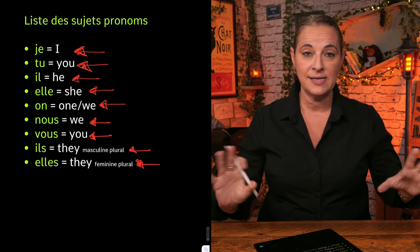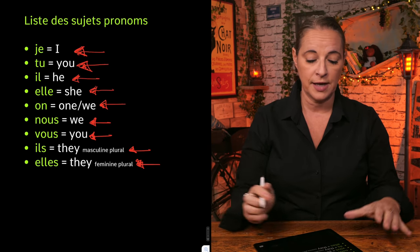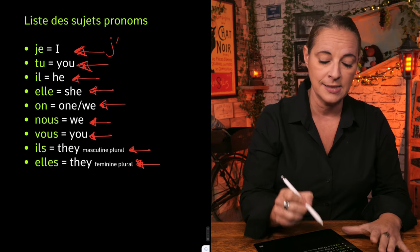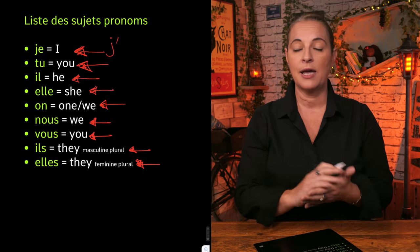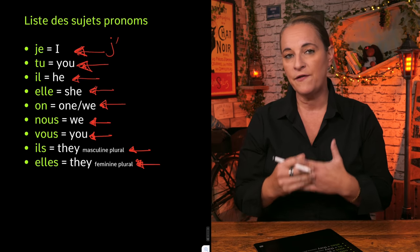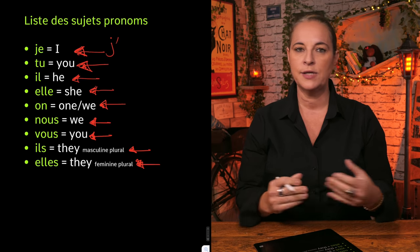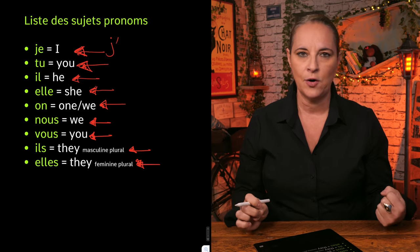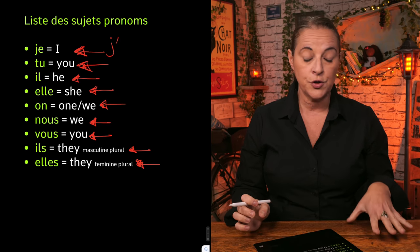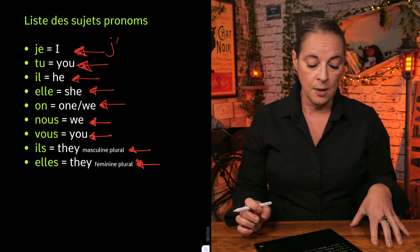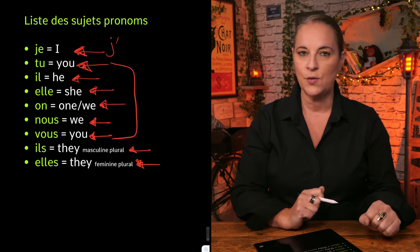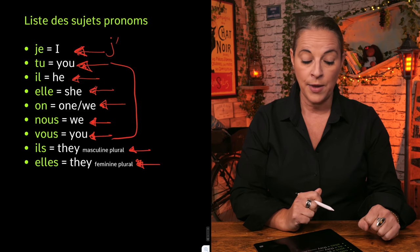Now for je, it is I. Sometimes you will see it as j'apostrophe — j' — depending on whether the verb that follows has a vowel or not. Tu is you, but we've got vous which means you as well.